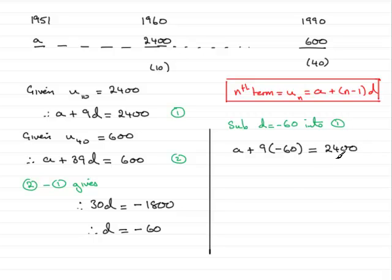And then if I work this out, we've got A, 9 times minus 60 is minus 540, and that equals 2,400.